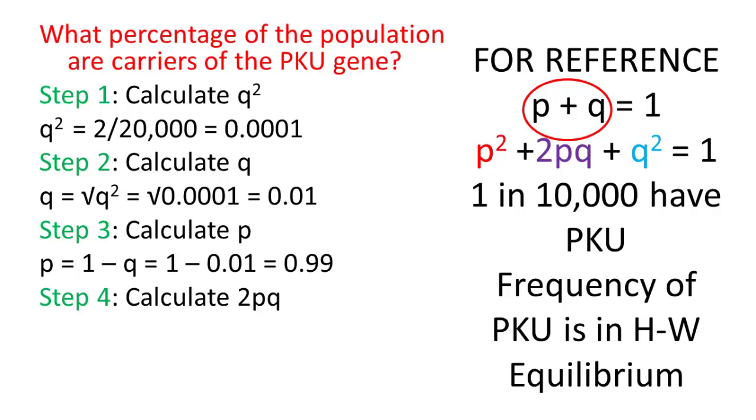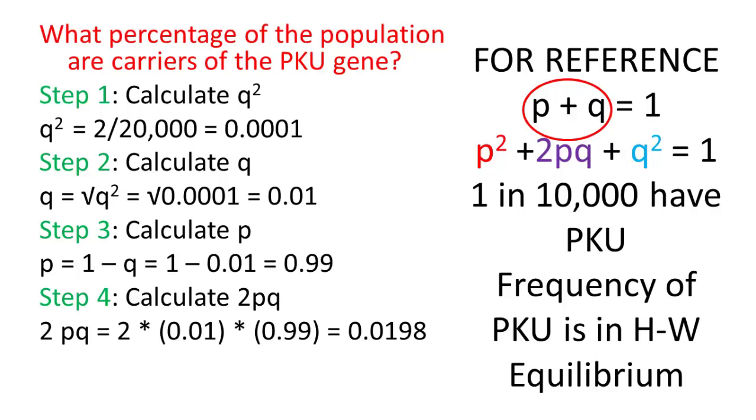We want to figure out how many are carriers, which means how many are heterozygous, which equals 2pq. So 2 times 0.99 times 0.01, and that equals 0.0198, or 1.9% of the populations are carriers of phenylketonuria. So there's an example of a problem. There's the principles, there's how you do it. We'll go over a lot more of these in class. Thank you.